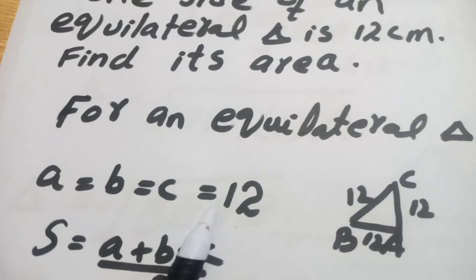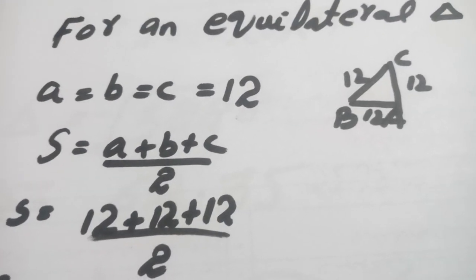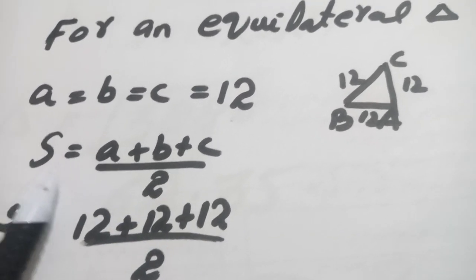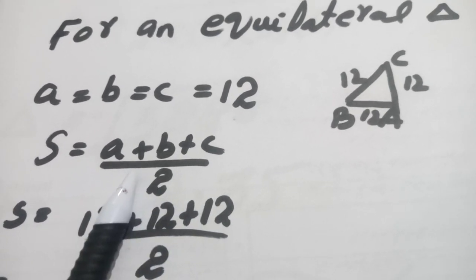It means three sides equal which is 12. Then here's the formula we will calculate: parameter s which is calculated as a plus b plus c by 2, sum of all the sides divided by two.